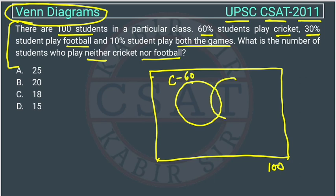This circle represents who are playing football. How many are playing football? 30%. So 30% of 100 will be 30. And 10% are playing both, so this will represent 10% of 100, which is 10.